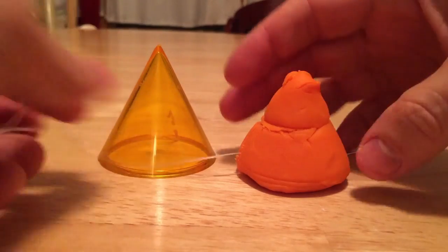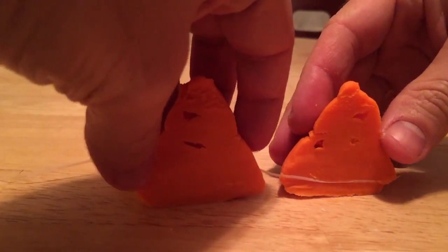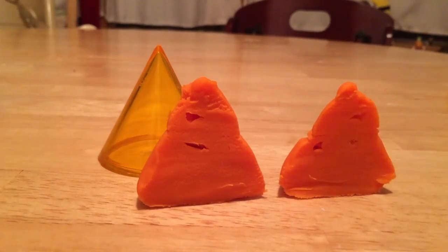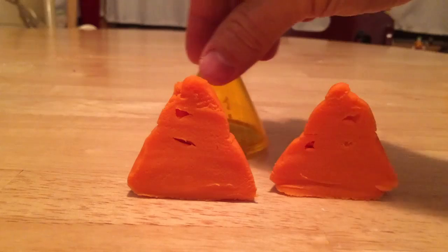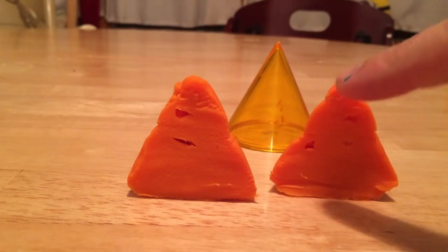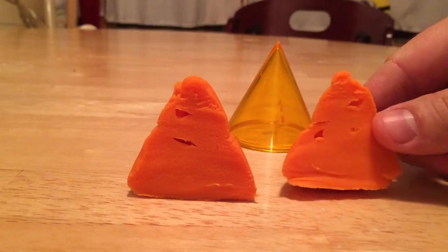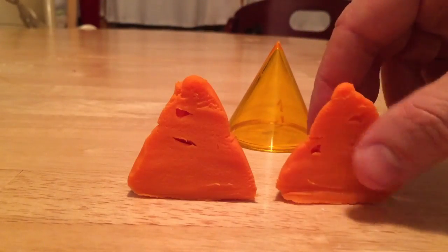And then I'm going to pull apart my cone so we can see the cross-section. And it's not perfect, but we can infer here, and we can see what's happening. If we cut the cone perpendicular to the base, the shape we get is this triangle right here. And it's not perfect, of course. It's not perfect because my model's not perfect.